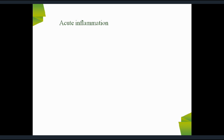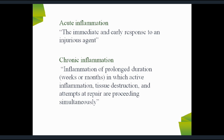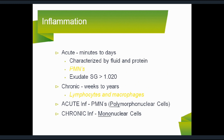Now, acute inflammation: who types inflammation as acute and chronic? Acute means a short-term response — it is an immediate and early response, also known as short-term response, to an injurious agent. What is chronic? It is inflammation with prolonged duration, also a simultaneous process where inflammation, tissue destruction, and attempts at repair must act together.